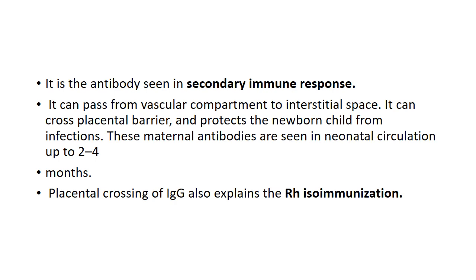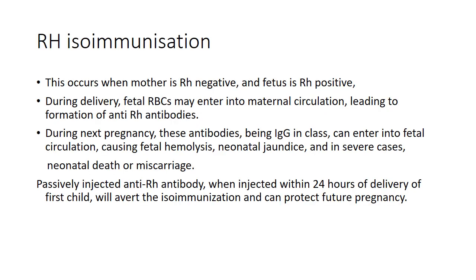Placental transfer of IgG also explains Rh isoimmunization. This occurs when the mother is Rh-negative and the fetus is Rh-positive. During delivery, fetal RBCs may enter maternal circulation, leading to formation of anti-Rh antibodies. During the next pregnancy, these antibodies, being IgG in class, can enter fetal circulation, causing fetal hemolysis, neonatal jaundice, and in severe cases neonatal death or miscarriage. Passively injected anti-Rh antibody, when injected within 24 hours of delivery, will prevent isoimmunization and can protect future pregnancies.